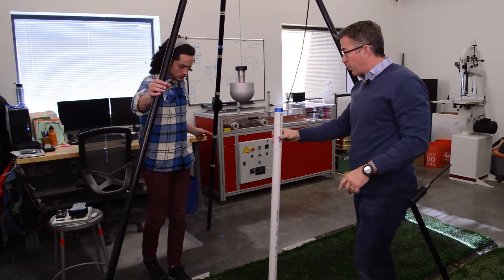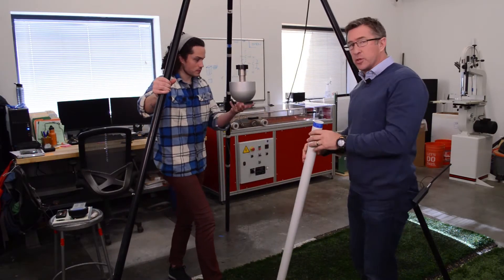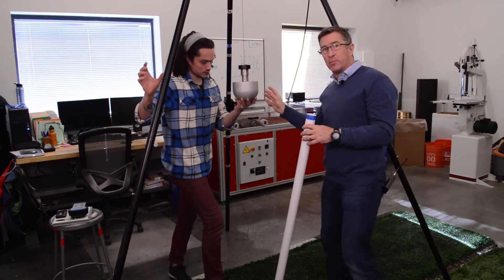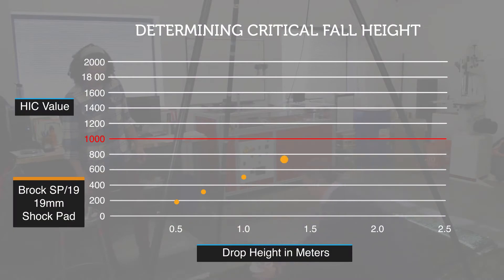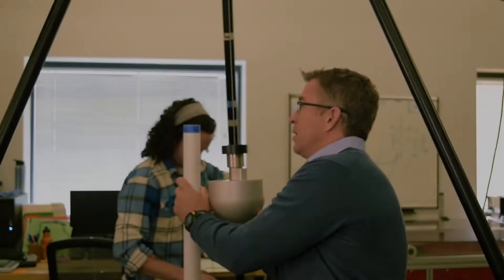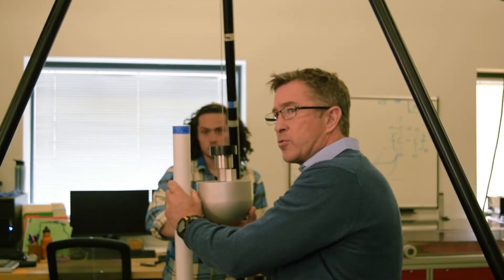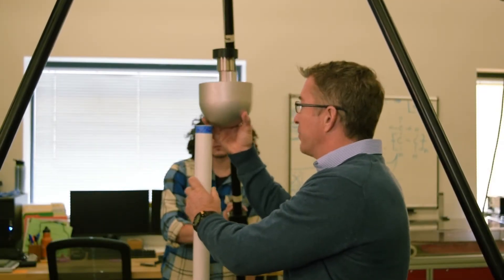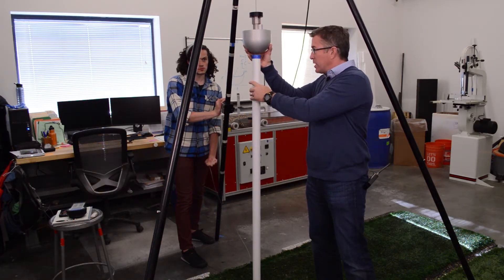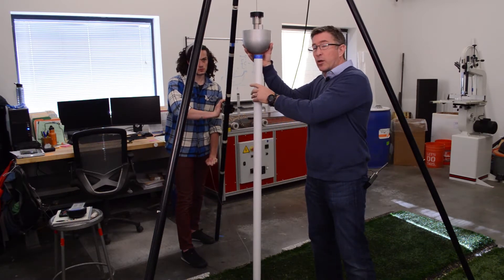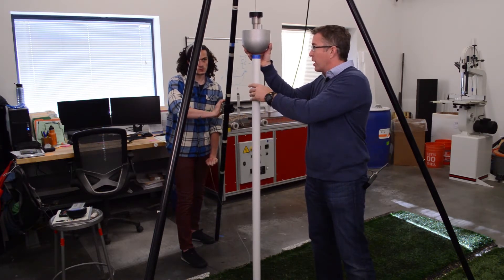So this is now the 1.3 meter drop, so this would be the representative drop height from the OneTurf concept. At the 1.3 meter drop height we are at a HIC of 858 on our third drop. We have to be below 1,000. But remember we need some failure points as well so we can plot our curve, so we are going to keep going up.